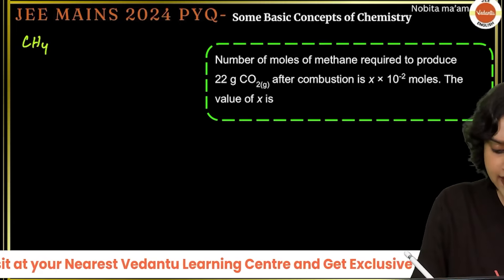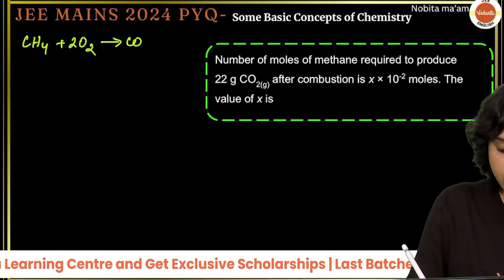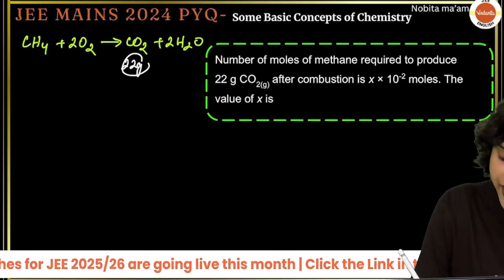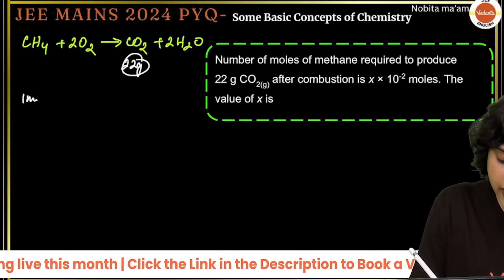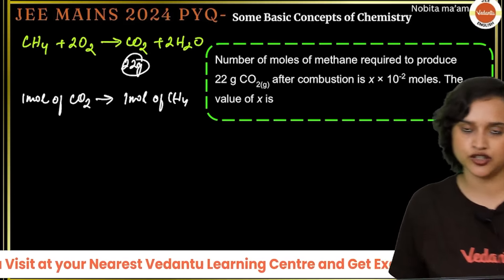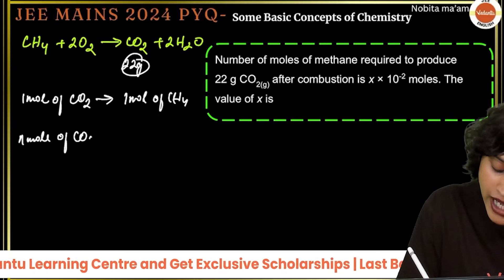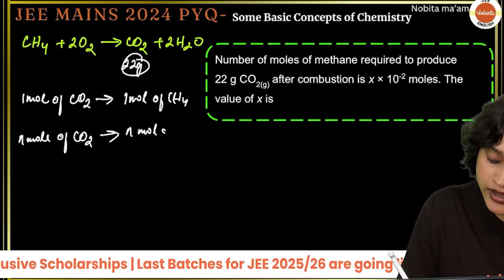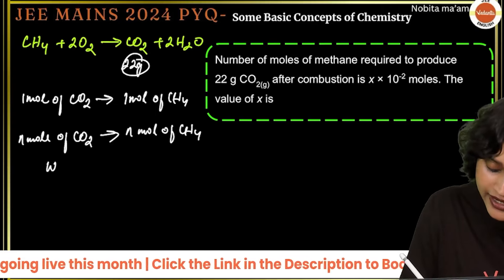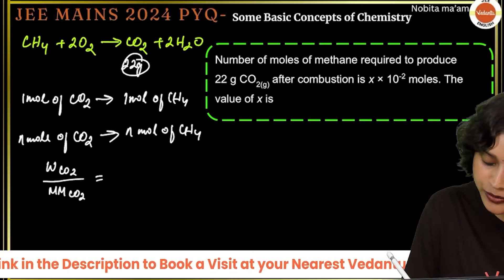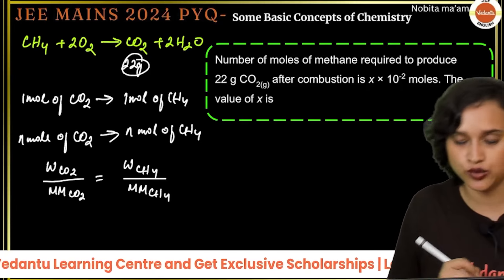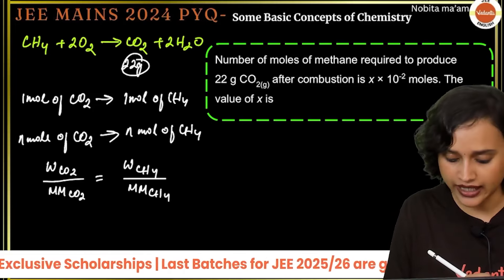From the equation, 1 mole of CH₄ produces 1 mole of CO₂. So n moles of CO₂ produced = n moles of CH₄ burned. Setting up: weight of CO₂ / molar mass of CO₂ = n moles of CH₄. Given mass of CO₂ = 22 g, molar mass of CO₂ = 44. So n = 22/44 = 0.5 moles.